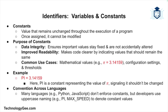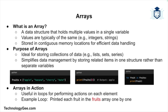A constant, as the name suggests, is a value that does not change during the execution of a program. Once it's set, it remains the same. Constants are used when you need to store data that shouldn't be altered — for example, mathematical values like pi or fixed configuration settings. In the example on your screen, pi equals 3.14; pi is a constant because its value does not change. Many programming languages such as Python and JavaScript don't have built-in support for constants, but developers use conventions like all uppercase letters to signify that a variable should not change.